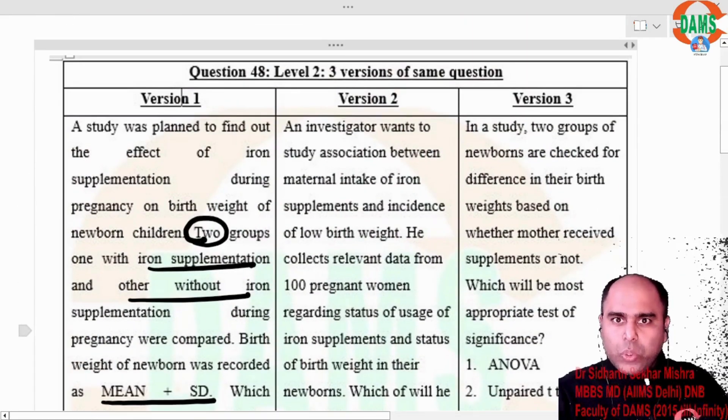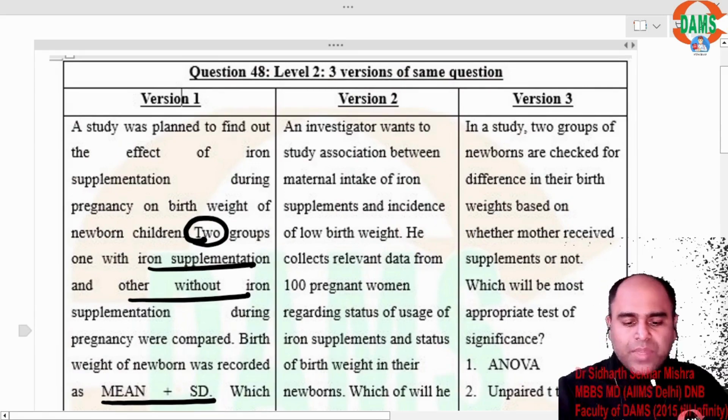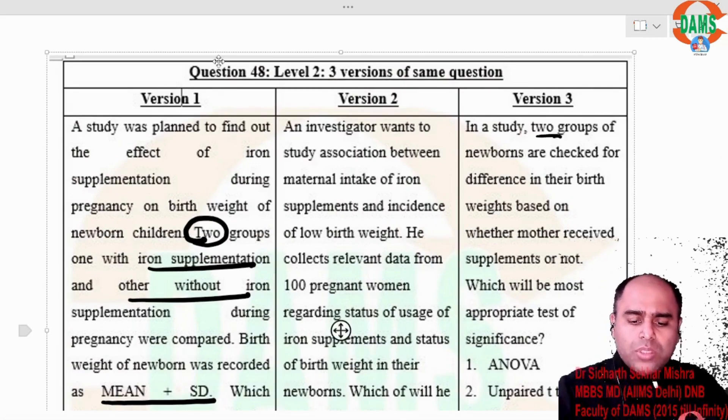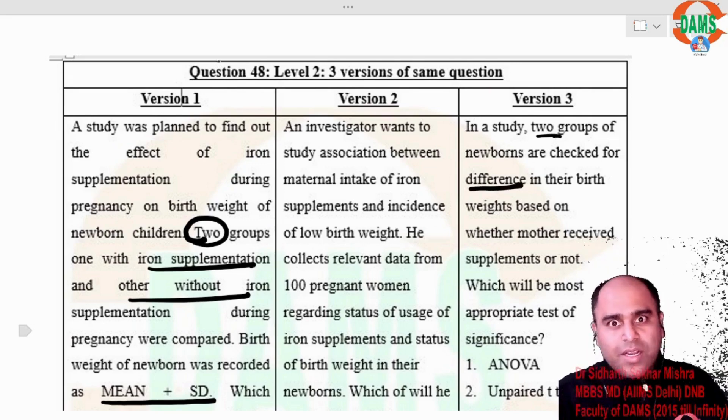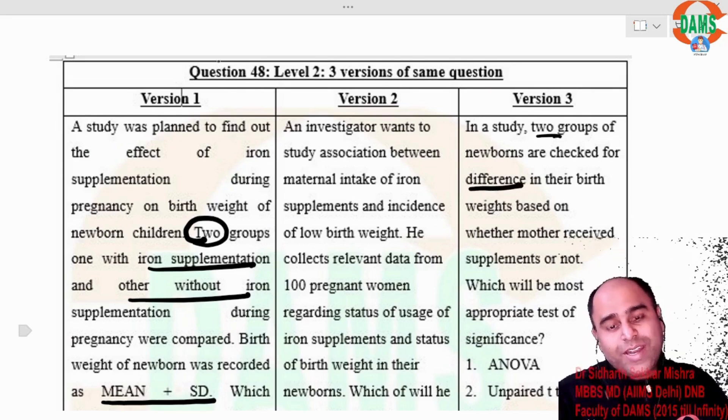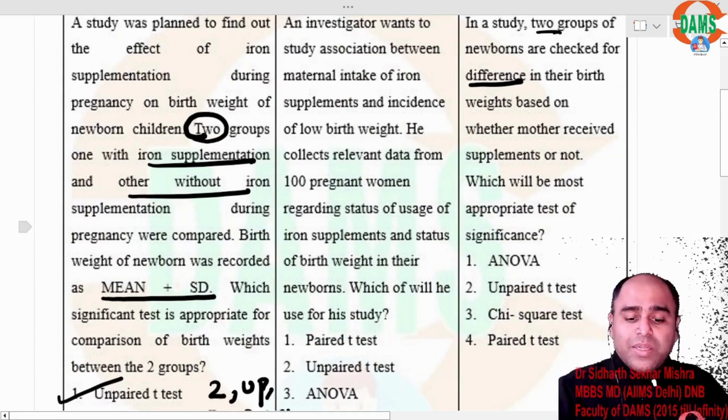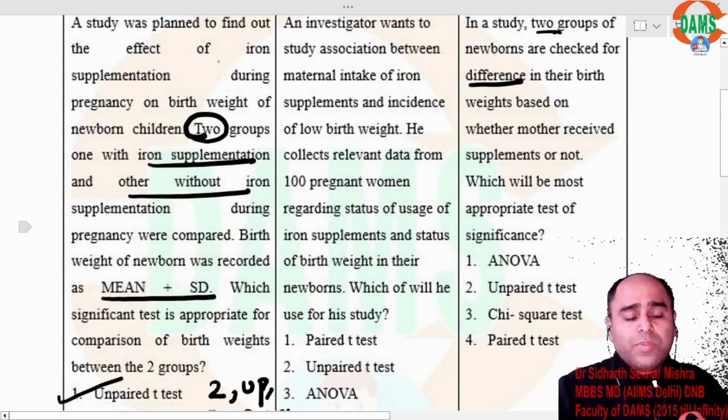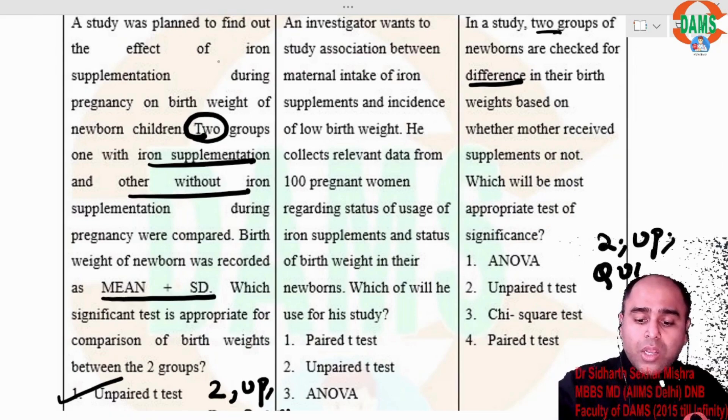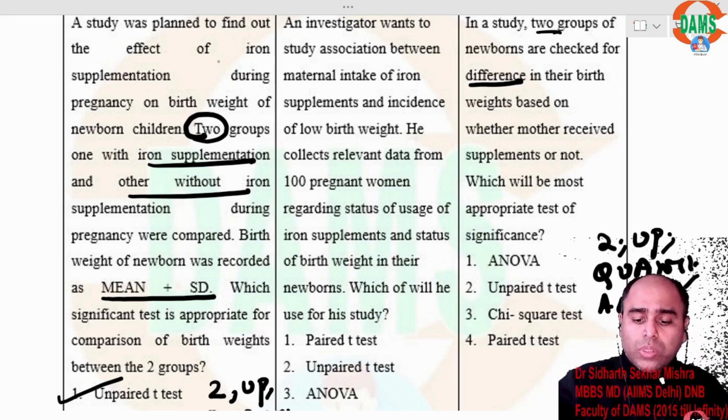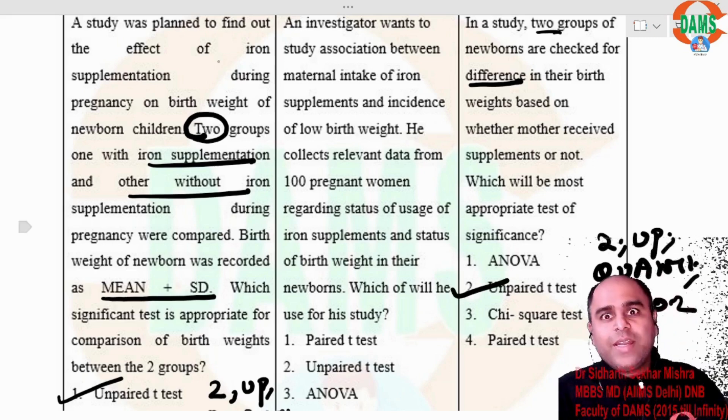I am skipping version 2. I am going directly to version 3. In a study, 2 groups of newborns were checked for difference. The keyword is difference. Difference can only be taken for quantitative variable. Whether the mothers receive supplements or not, which will be the most appropriate test. So again, two groups. Unpaired. Quanti. Again, algorithm 2. Your answer, unpaired t-test.